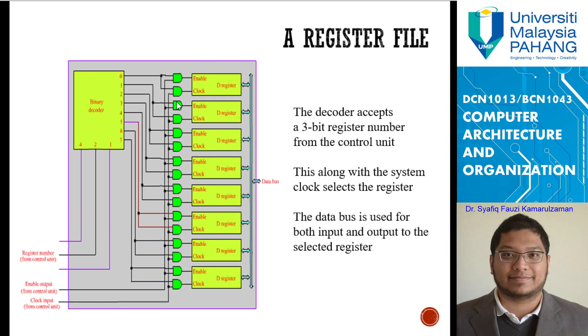Here is an example of a register file. The decoder accepts a 3-bit register number from the control unit. This is where the address is. This, along with the system clock, selects the register. The data bus is used for both input and output to the selected register. Data bus will come in into the selected register. Here is where the control unit works. We have clock input and enable output from the control unit, and this is also a register number from the control unit. Here is where you have the address of the register.